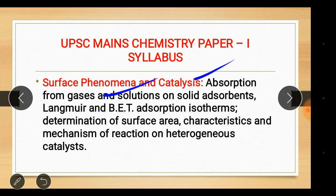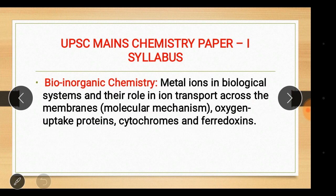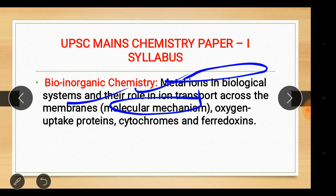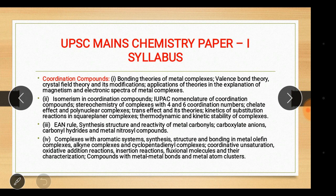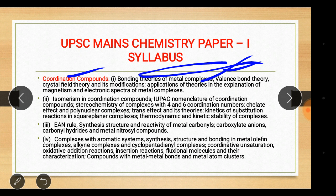Bio-inorganic chemistry: metal ions in biological systems and their role in ion transport across membranes, molecular mechanism of oxygen uptake, proteins, cytochromes and ferredoxins. Coordination compounds: bonding theory of metal complexes, valence bond theory, crystal field theory and its modifications, applications in the explanation of magnetism and electronic spectra of metal complexes.